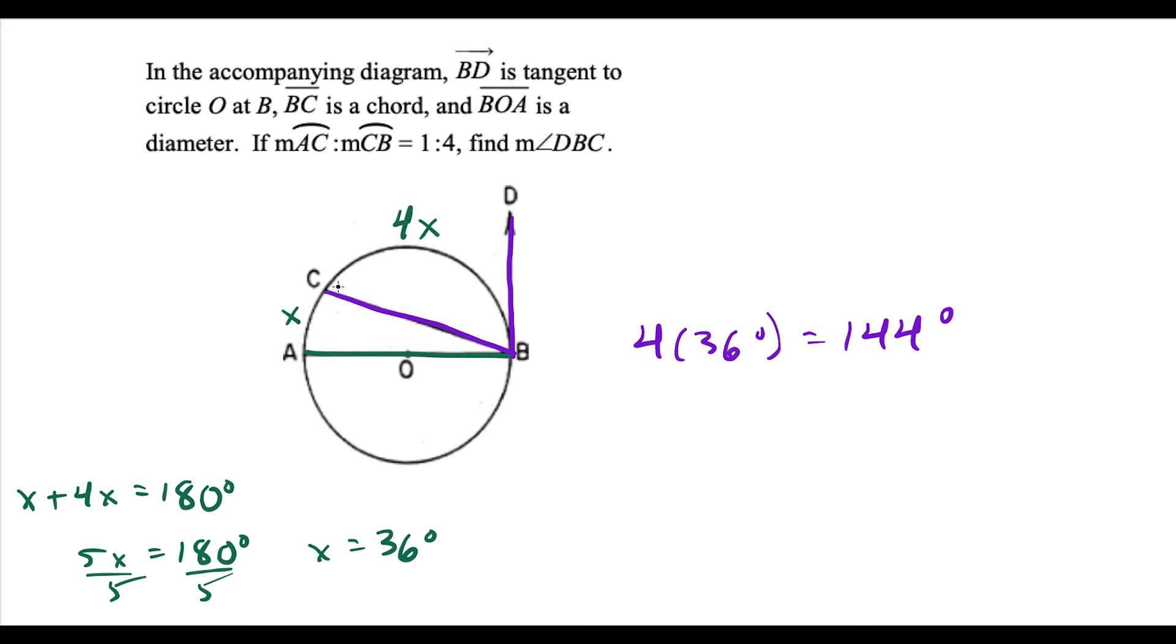Now we use that theorem again. The arc is 144 degrees, and the measure of the inscribed angle is half of that angle, so we divide by 2. This tells us the measure of angle DBC is 72 degrees.